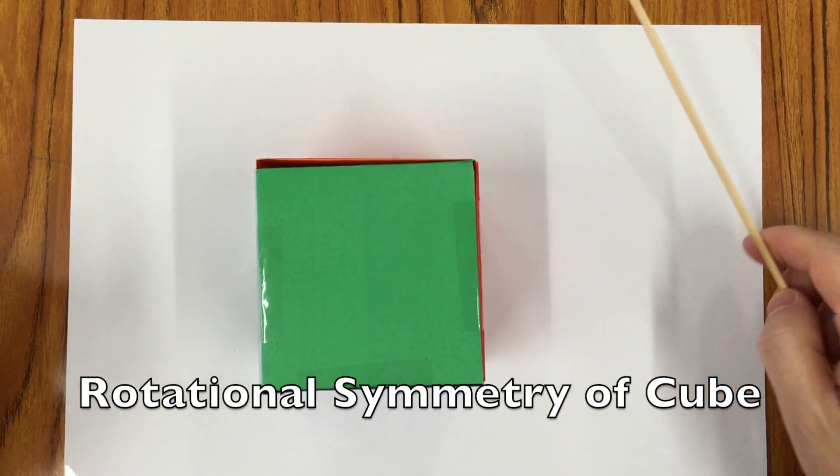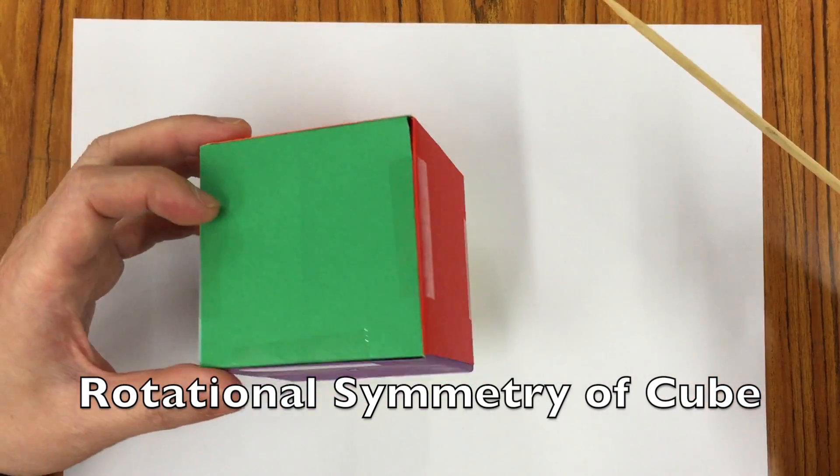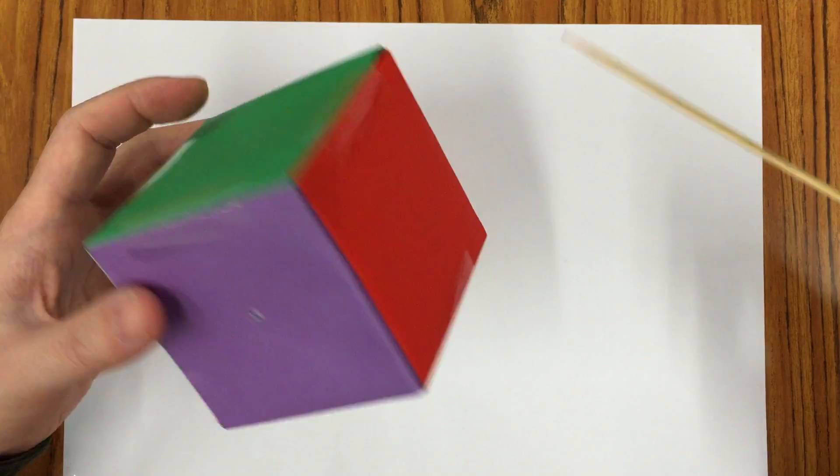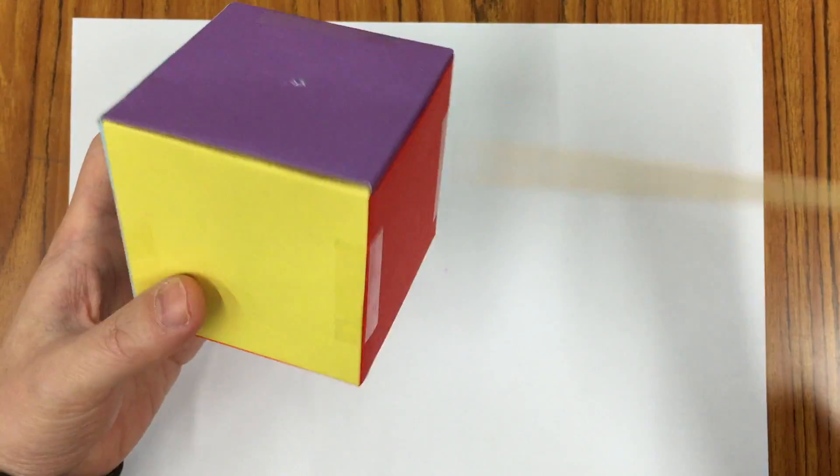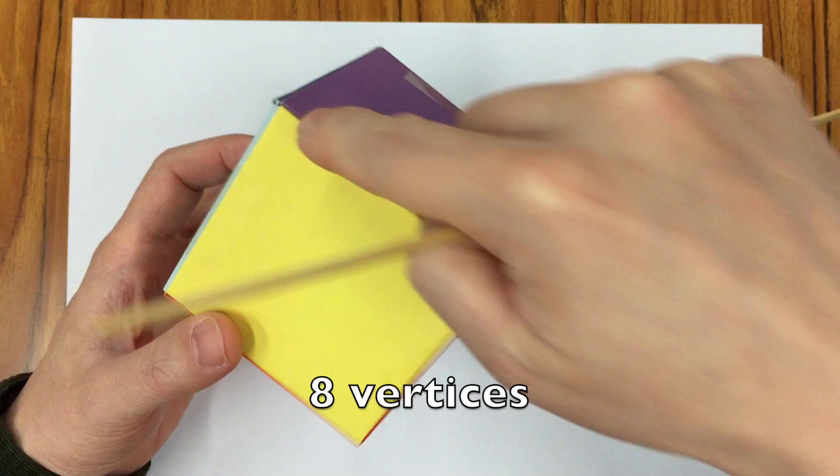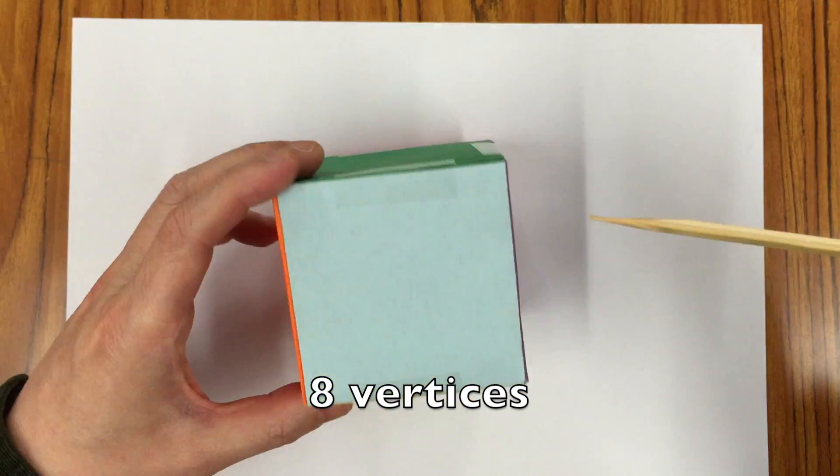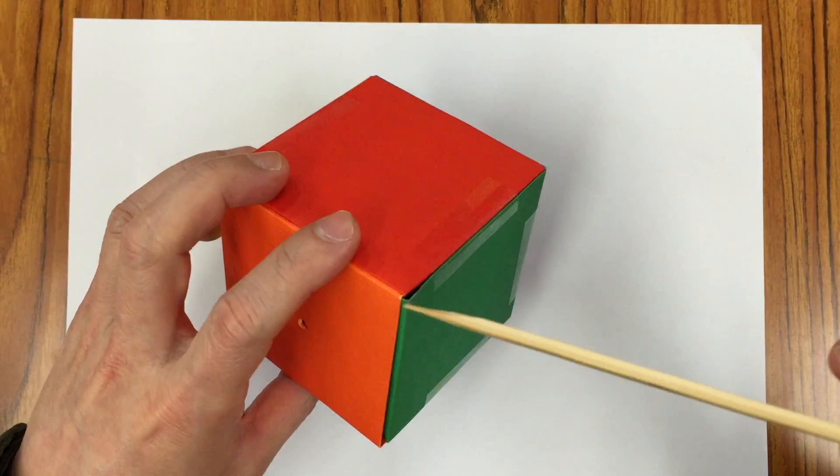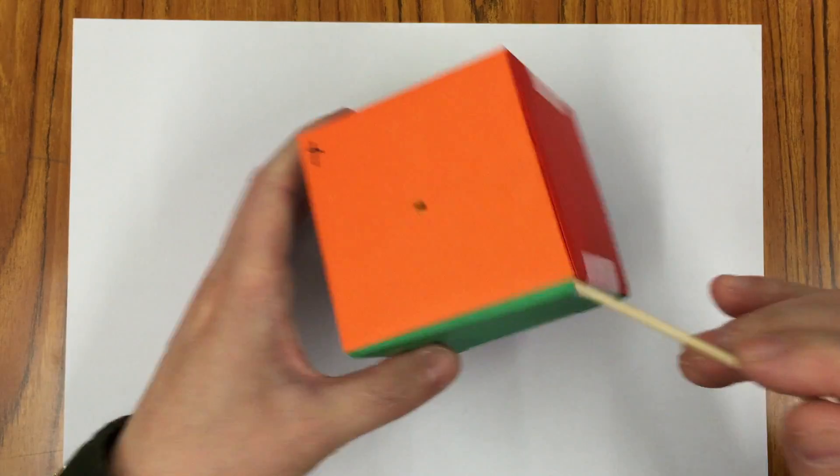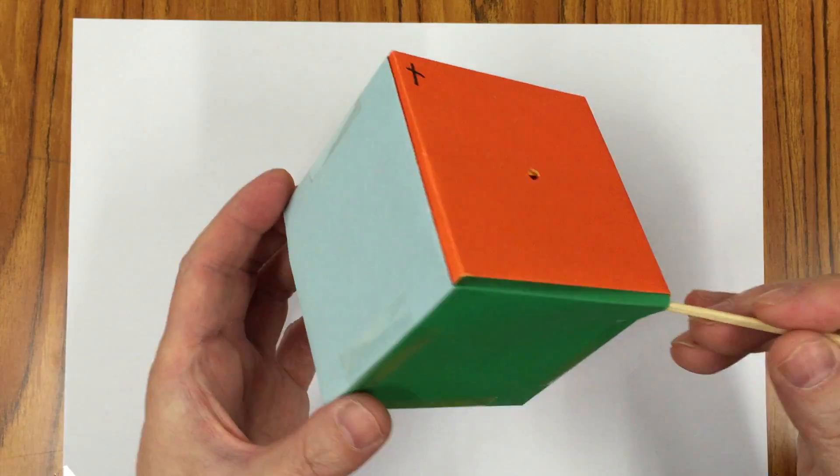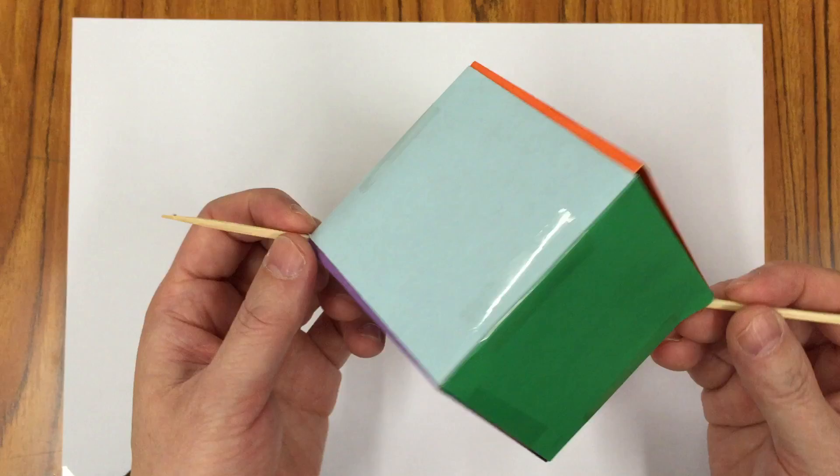Now let us investigate the second form of rotational symmetry of a cube. A cube has eight vertices. Can we put a stake through one of the vertices and then get out from another one?